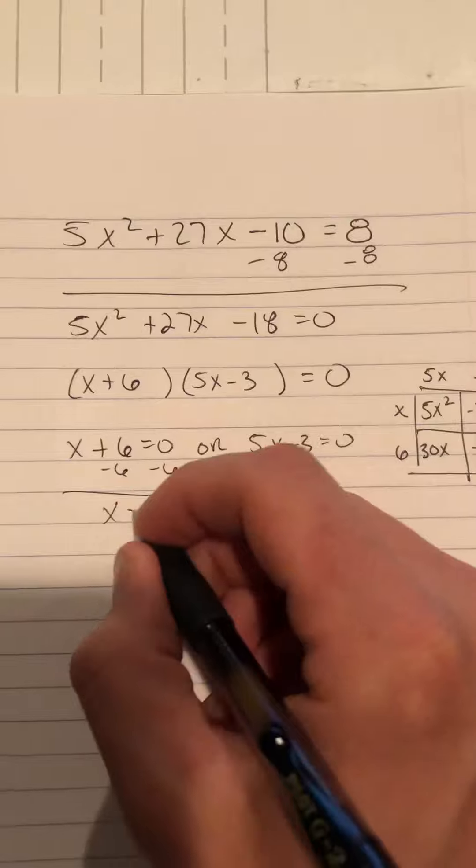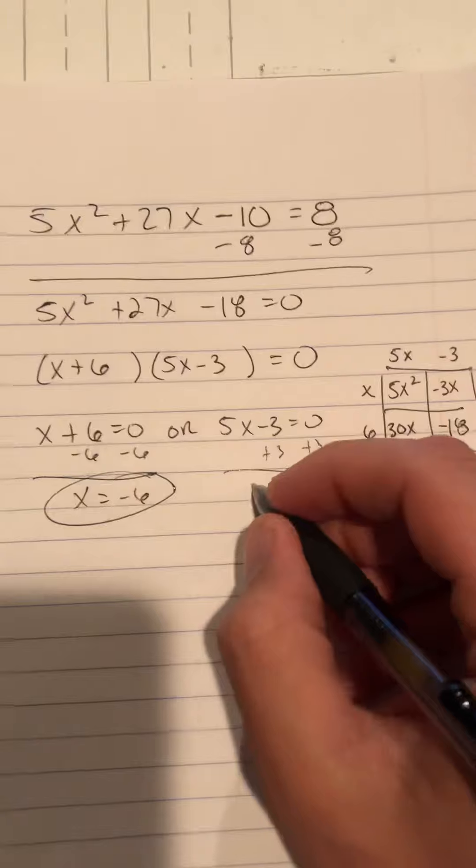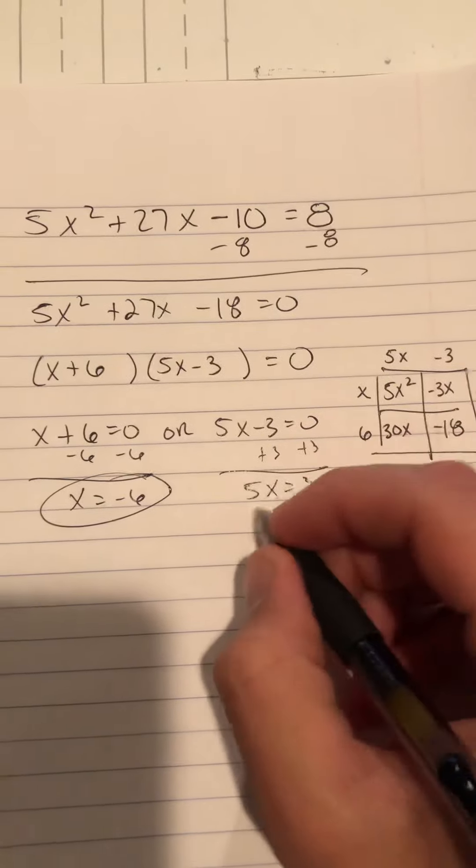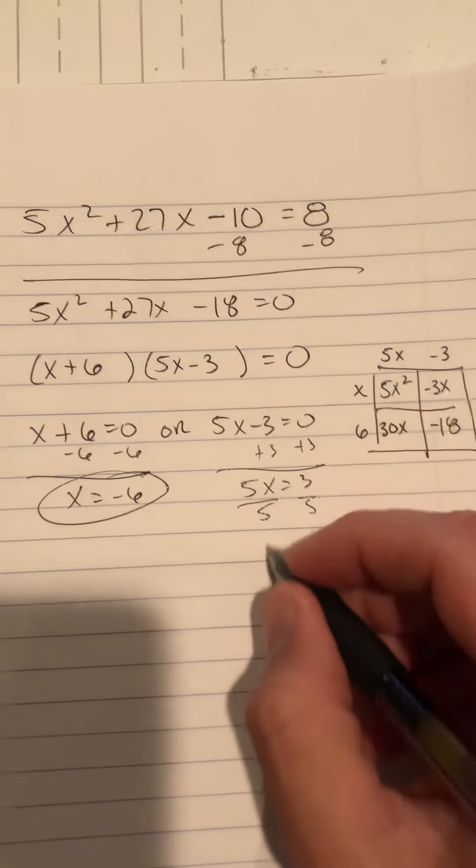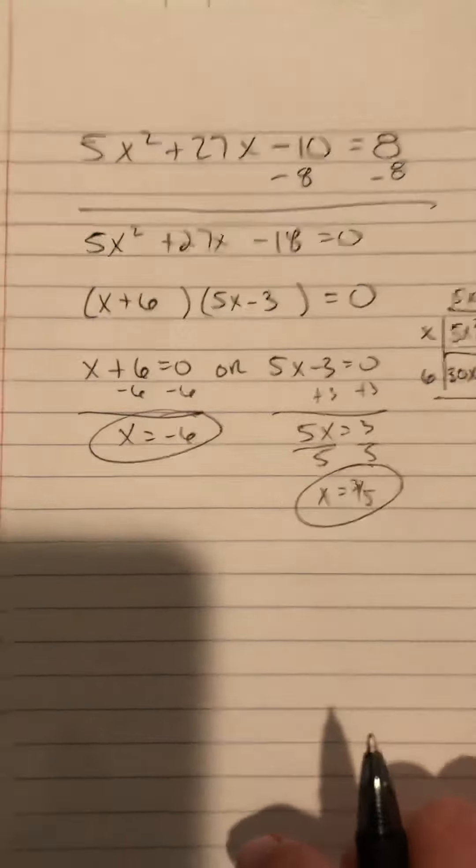Subtract 6 from both sides. That one's done. Add 3 to both sides, and divide by 5. Now that one's done. My answers are 3 fifths and negative 6.